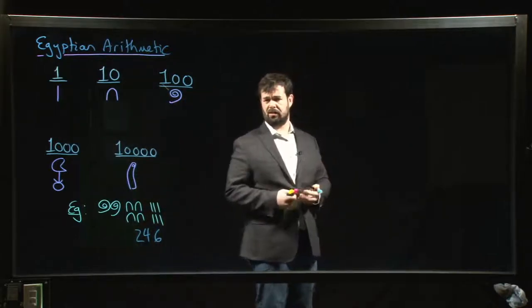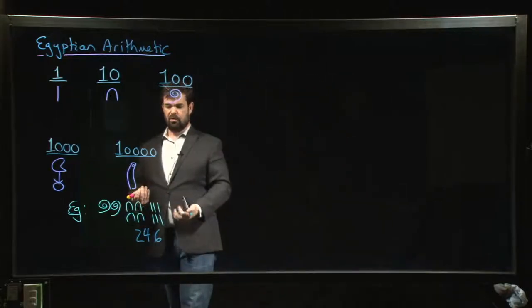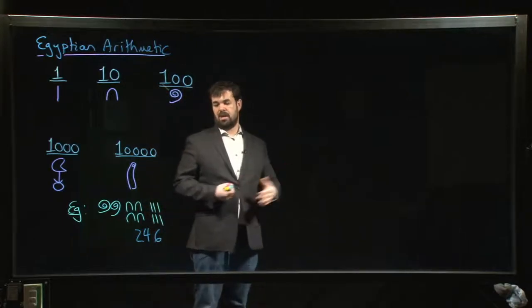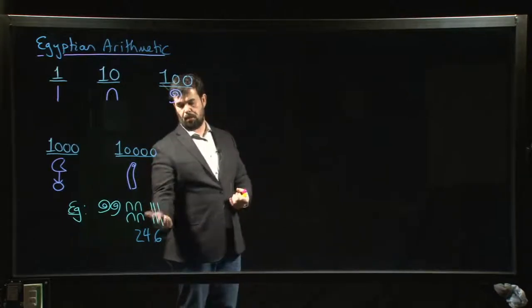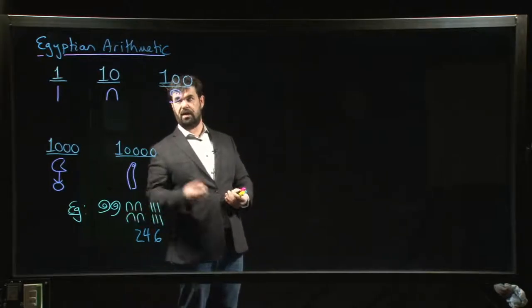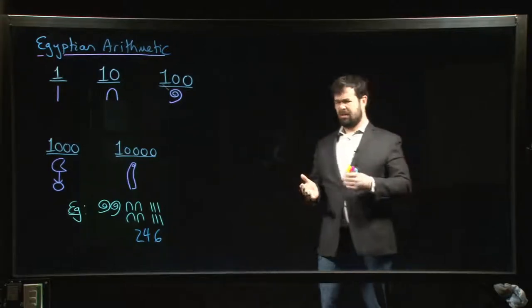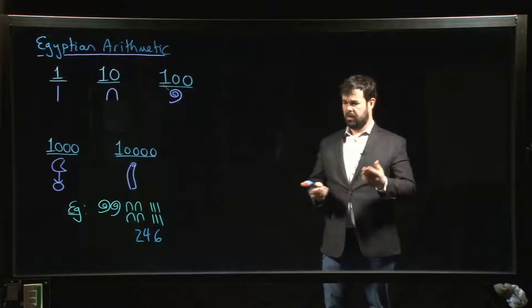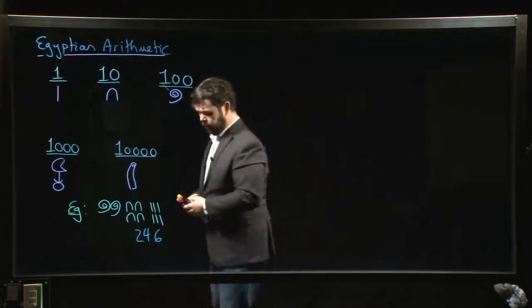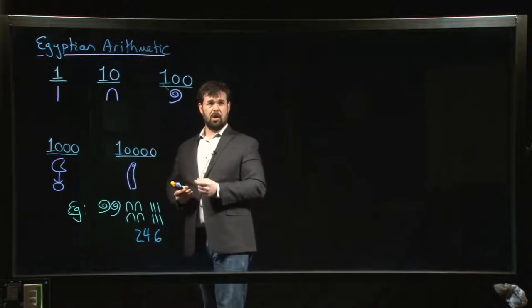Adding and subtracting are pretty straightforward in this system because if you want to add two numbers, you just add up the number of each type of symbol. If you have more than ten staffs, then you group ten of them together to get a cattle hobble. You do a little bit of grouping, but this is the same thing as when you carry a one when you're doing addition in our system.